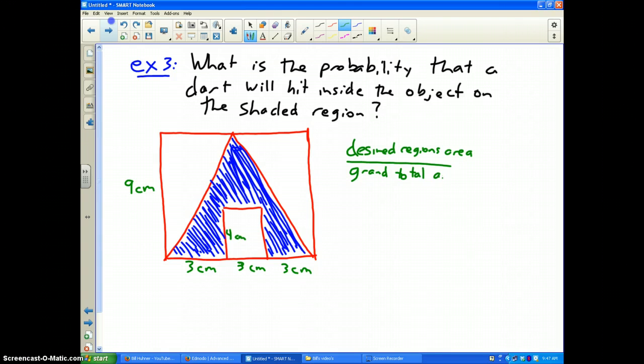That's the easiest part. Well, hopefully you found the bottom part first. Grand total area would be the area of the square. This adds up to 9 centimeters times 9 centimeters, so 9 times 9 is 81. Hopefully you got that.